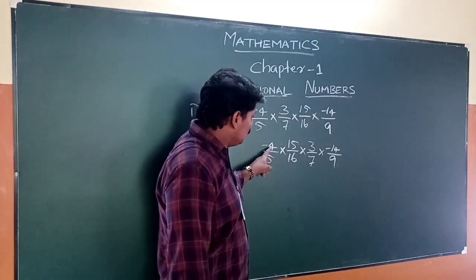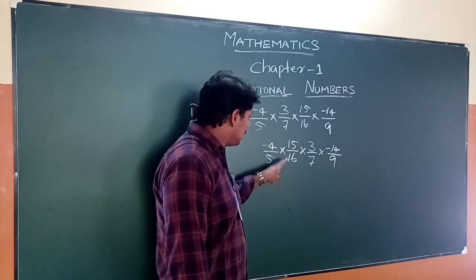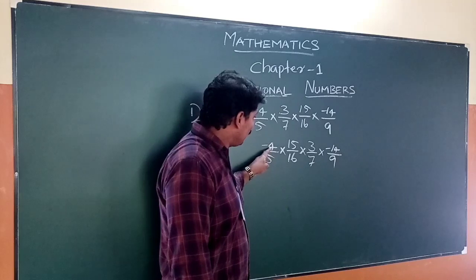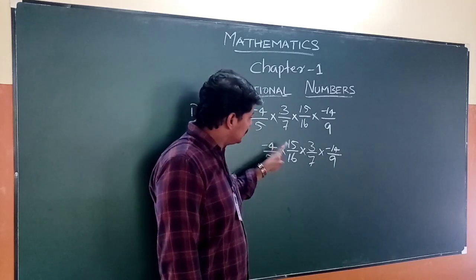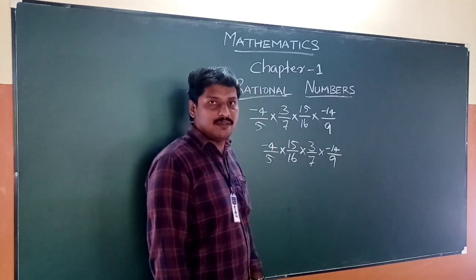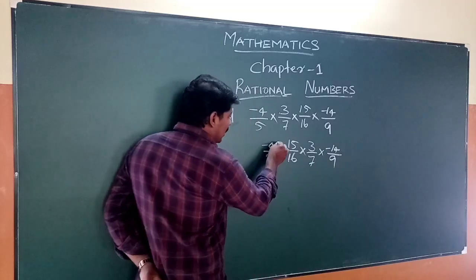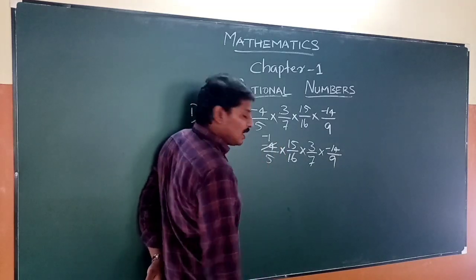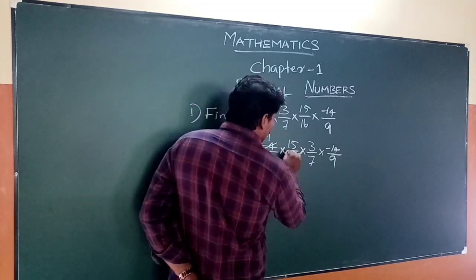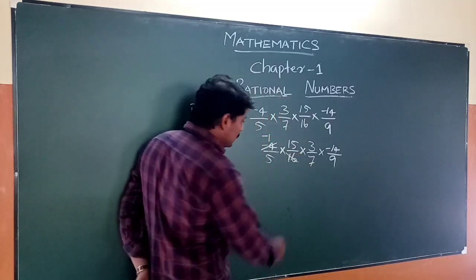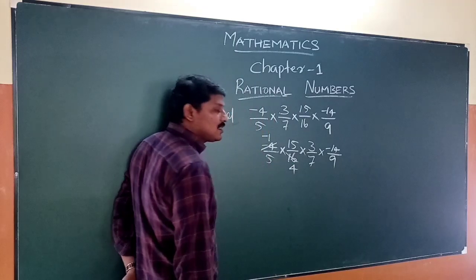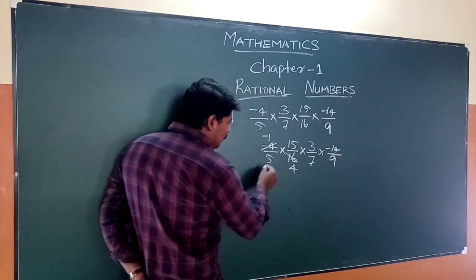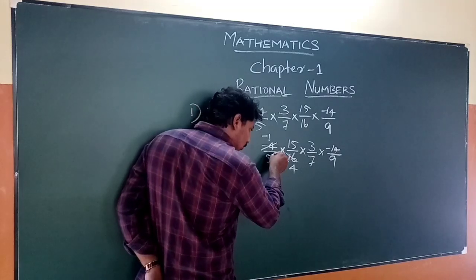We simplify by canceling common factors. Starting with 4: since 4 divides 16, we get 16 divided by 4 equals 4. We continue canceling 4s from the numerator and denominator.